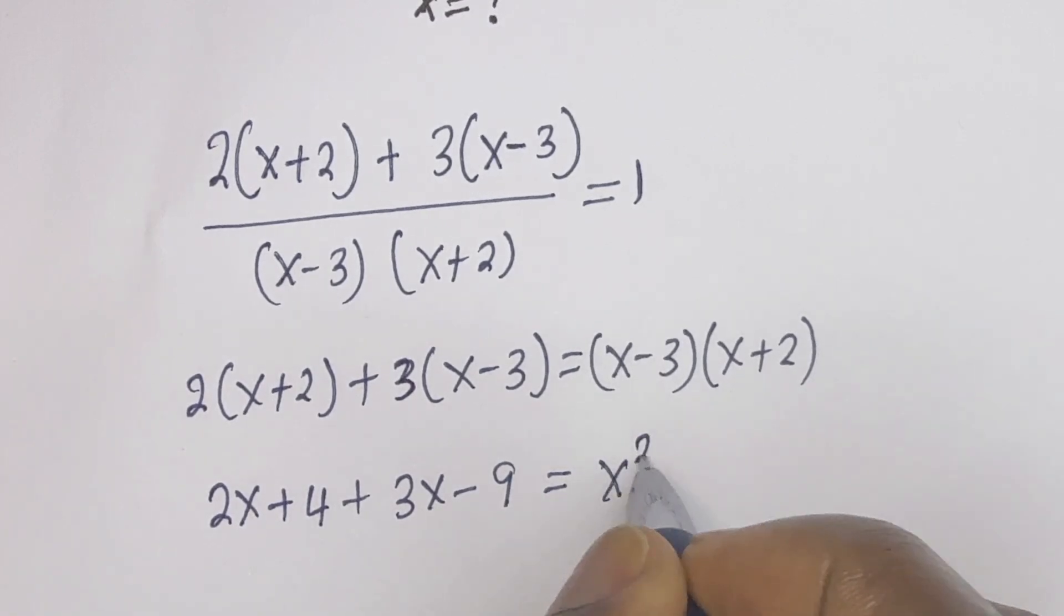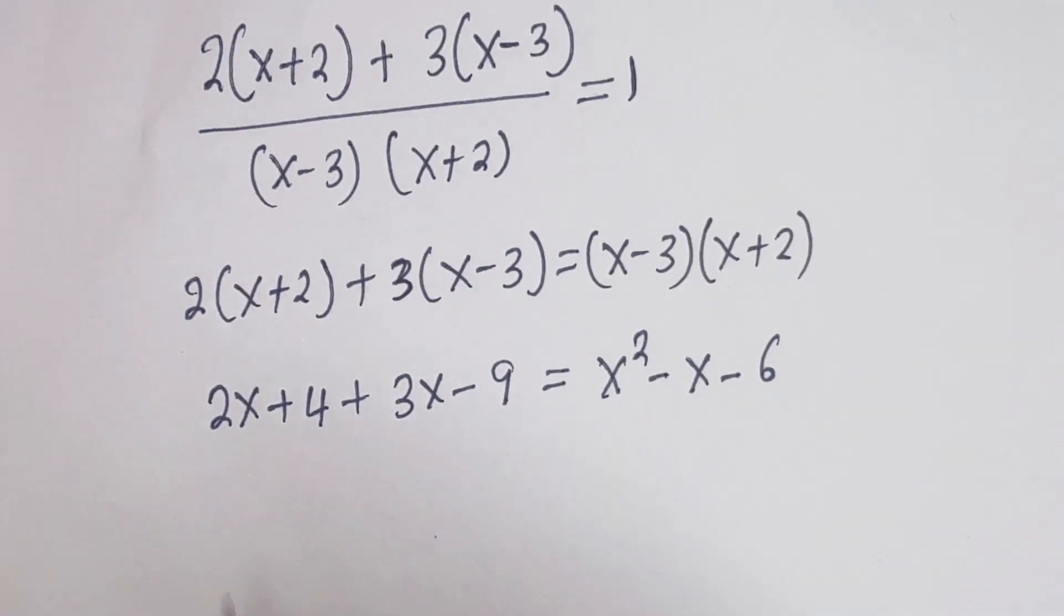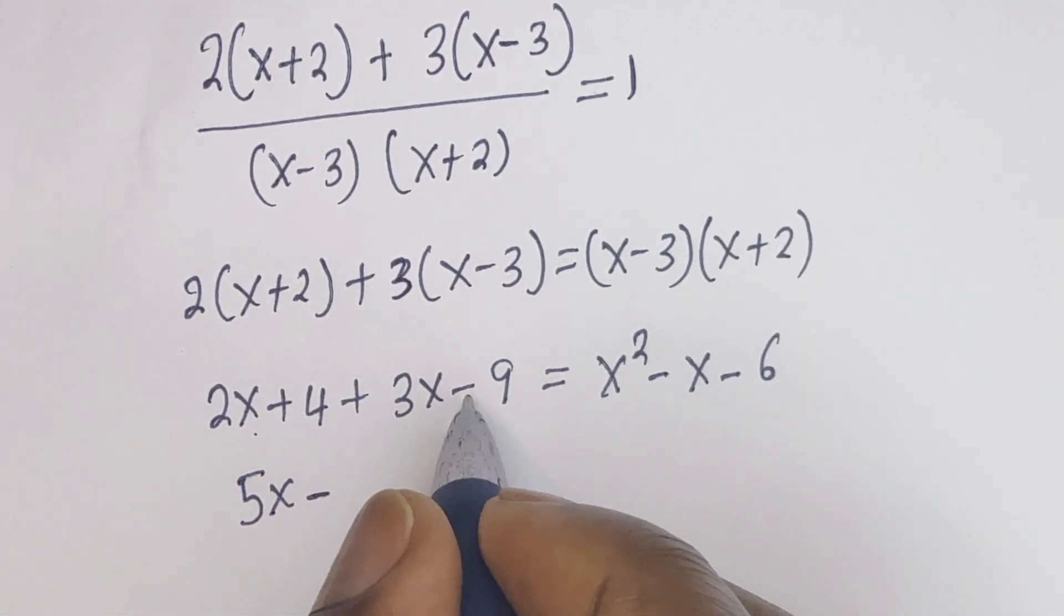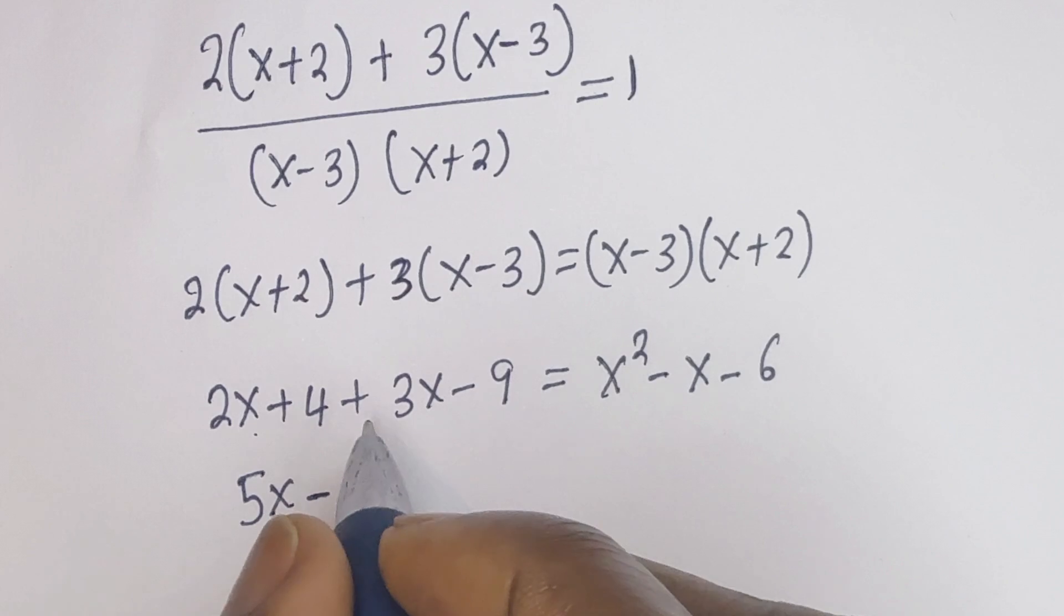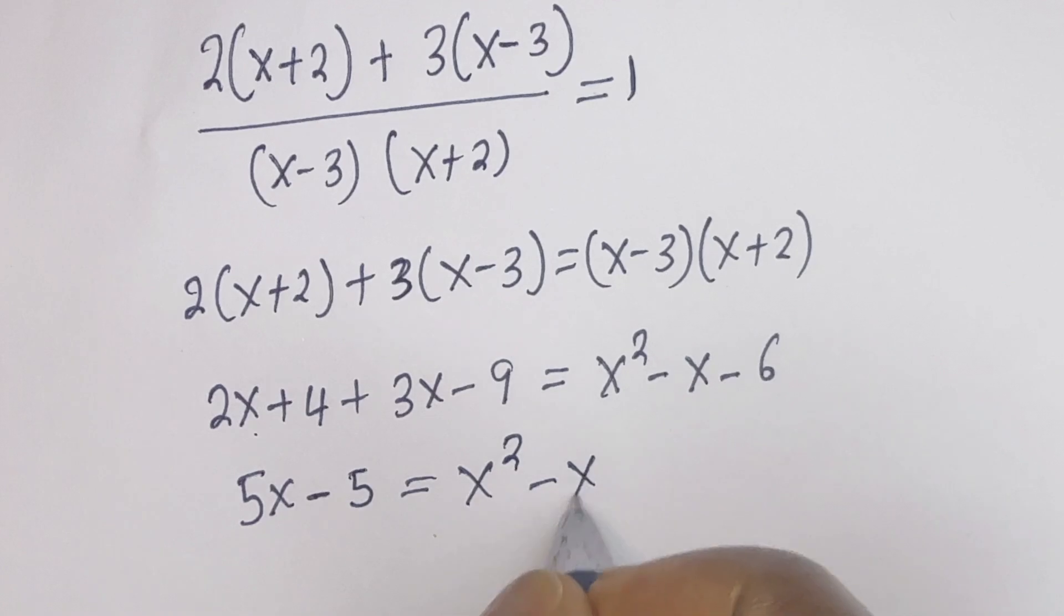we have x squared minus x minus 6. Then here is 2x plus 3x, 5x minus 4 plus 4 minus 9. That is 5 is equal to x squared minus x minus 6.